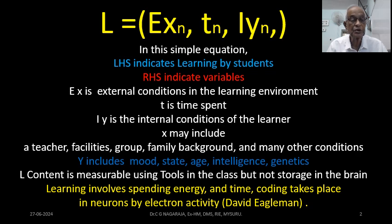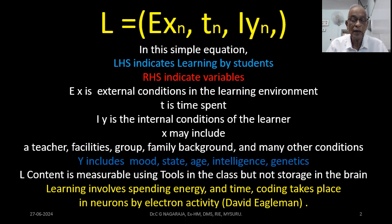Brain scientists explain that the moment stimuli from the eye and the ear go to the brain, through the nerves to the neurons, electrons will interfere, change, and act — and then the information is coded. How it is coded is not fully known, but it is coded. Whatever information we receive is stored in the form of short-term memory or long-term memory. All these things cannot be measured by an ordinary teacher.